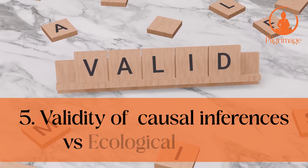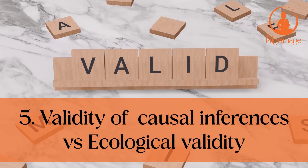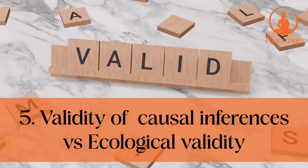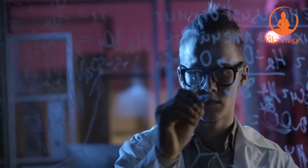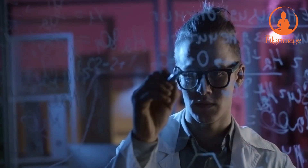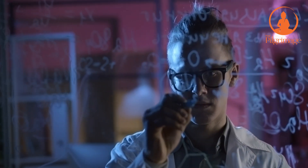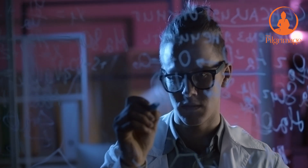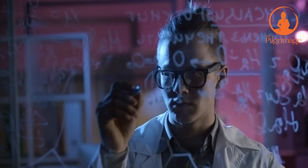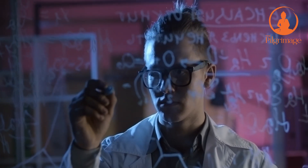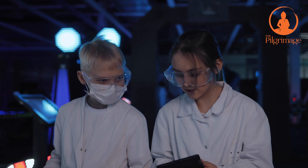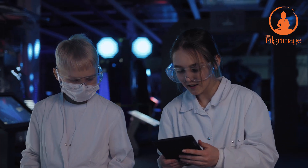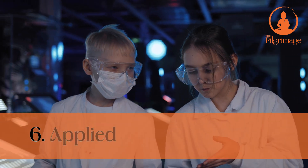Issue 5: Validity of causal inferences vs. Ecological validity. Should we study cognition by using highly controlled experiments that increase the probability of valid inferences regarding causality? Or should we use more naturalistic techniques?